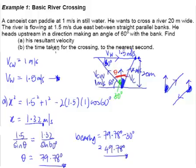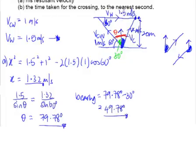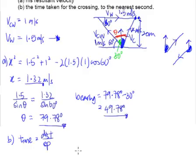Part B asks us to find the time taken for the crossing to the nearest second — the time taken to travel from one bank to the other. Since primary school, we know that time = distance ÷ speed. The speed we are crossing at is 1.32 meters per second — that's Part A's answer, the actual speed.